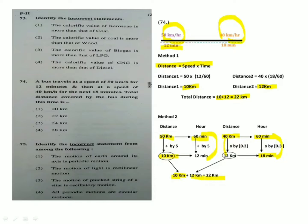Next question: Identify the incorrect statement from the following. The motion of the earth around its axis is a periodic motion — correct. The motion of light is a rectilinear motion — correct. The motion of a plucked string of a sitar is an oscillatory motion — correct. All periodic motions are circular motion — this is an incorrect statement. So the answer is option 4.